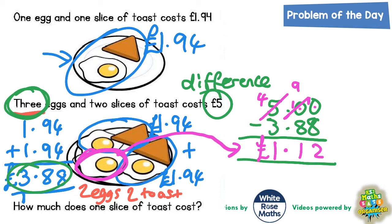Just because that extra egg costs £1.12, that must also mean that all the other eggs cost £1.12 — so all the eggs cost £1.12. Now we've got one final step to do. Now that we know an egg costs £1.12, and the egg and toast together is £1.94, if we take that £1.12 off of £1.94 we will get our final answer for the cost of the toast.